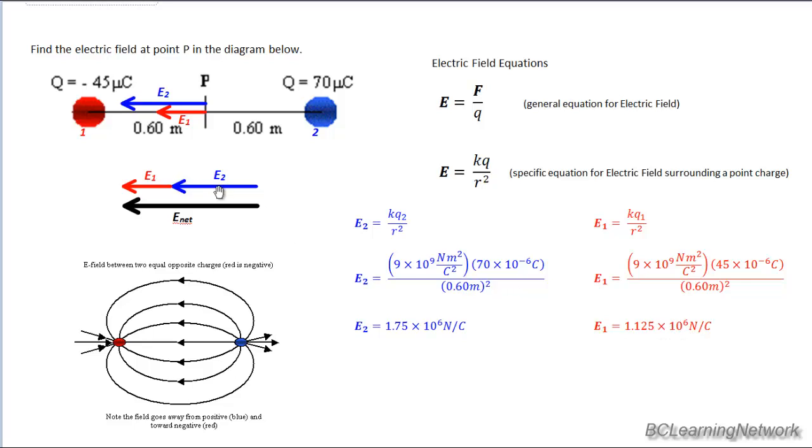So the only thing left to do is add them together to get my net electric field pointed to the left. So one more step. Let's complete it. So our final value of our net electric field, E1 plus E2, tip to tail, is 2.88 times 10 to the 6 newtons per coulomb. And it's directed towards the left.